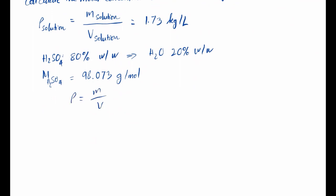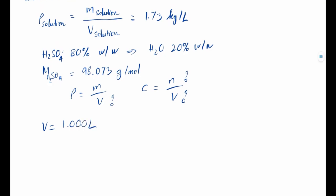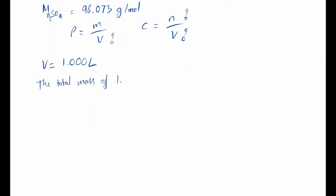First, molar concentration equals the number of moles of sulfuric acid divided by the total volume of the solution. We are not given either of those directly — only the density, a mass fraction, and the molar mass. However, since molar concentration is the same regardless of volume, and from density we can calculate any mass or number of moles, we can set volume to be one liter for convenience: V = 1 L.